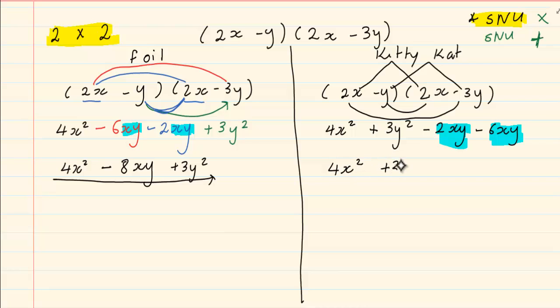4x squared has no like terms. Plus 3y, y squared has no like terms. But minus 2 minus 6 is negative 8xy.